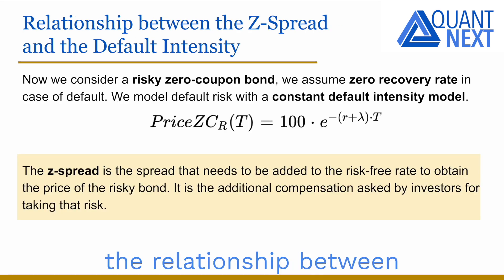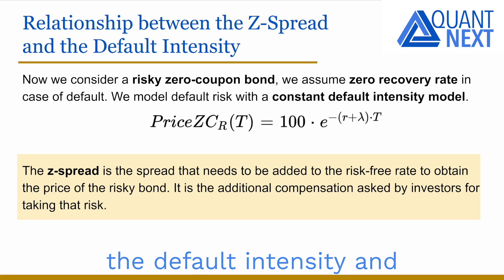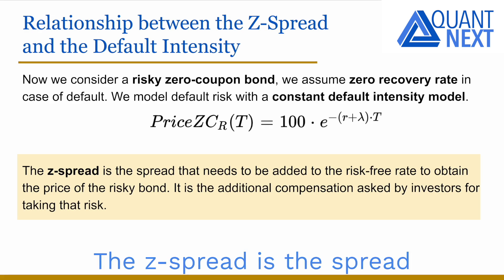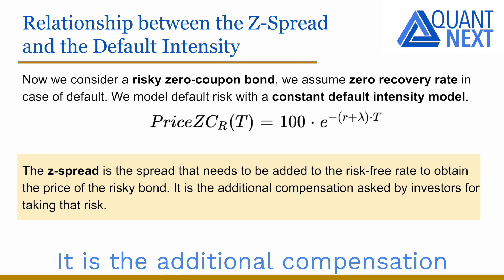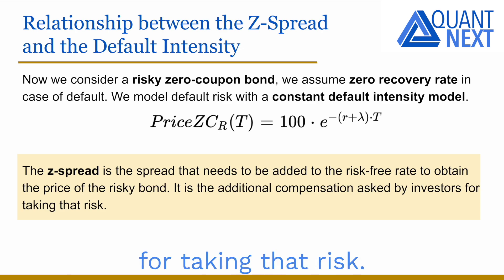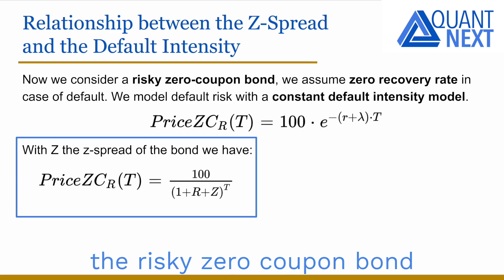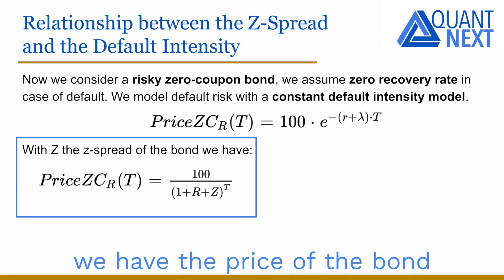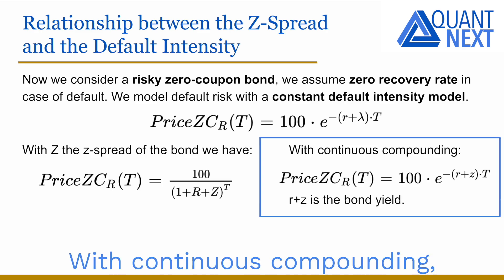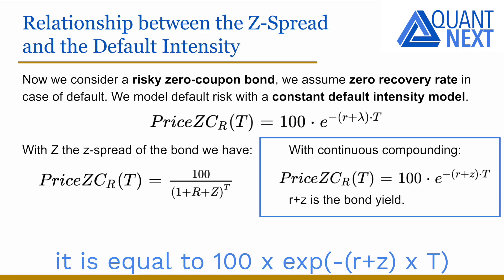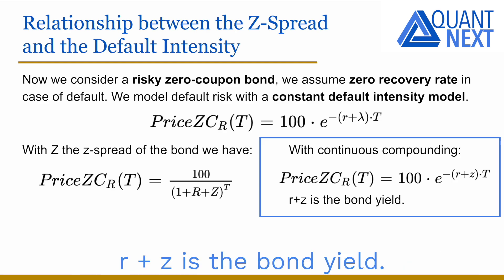We will now see the relationship between the default intensity and the z-spread of the bond in this framework. The z-spread is the spread that needs to be added to the risk-free rate to obtain the price of the risky bond — it is the additional compensation asked by investors for taking that risk. With capital Z as the z-spread, the price of the bond equals 100 divided by (1 plus R plus Z) to the power t. With continuous compounding, it equals 100 times the exponential of minus (R plus Z) times T. R plus Z is the bond yield.